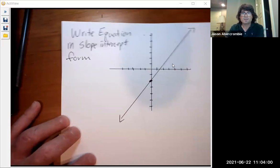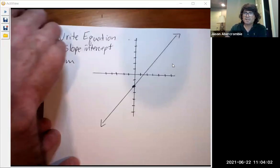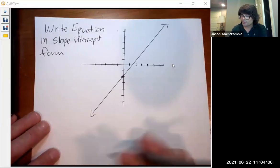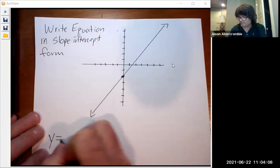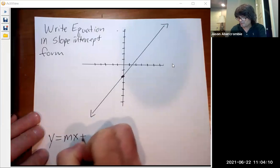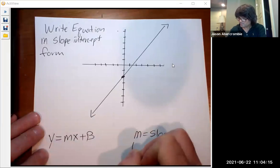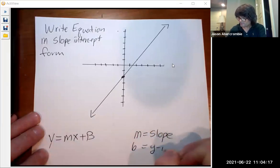So what I've got here is a picture of a line, and for slope-intercept form you need two things. I'll write down the form y equals mx plus b. m is the slope and b is the y-intercept.